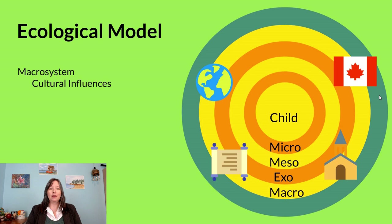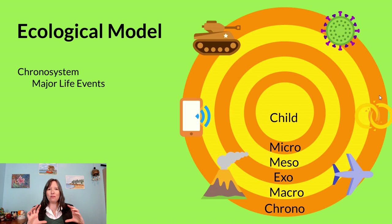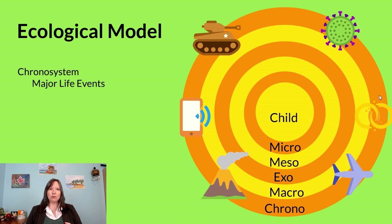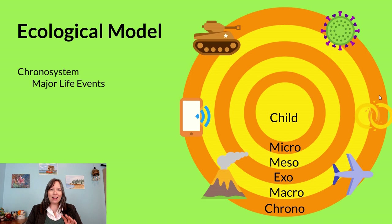Finally, in Bronfenbrenner's model, we have the chronosystem — the major life events that occur at certain times during our formative years. These could be negative things like divorce, war, a global pandemic, or a natural disaster. Or there could be positive things like immigrating to a new country, getting a stepparent, being adopted, or getting access to the internet. Most developmental psychologists agree this is a really good theory, but it's very hard to test statistically, so we're going to leave it here in the theory section and won't revisit it in the rest of this unit.